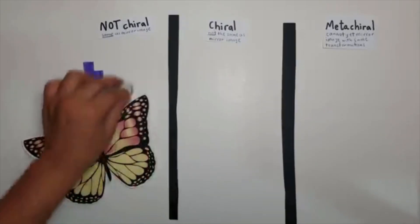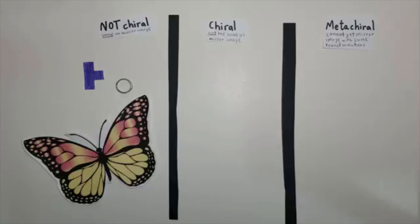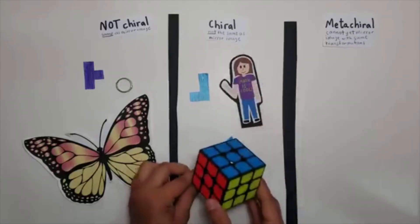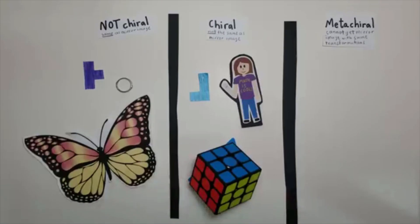This T-shaped butterfly and ring are not chiral. Some chiral objects are this J-shape, the girl's shirt, and this Rubik's cube. A few metachiral objects are this drill bit and pasta piece.